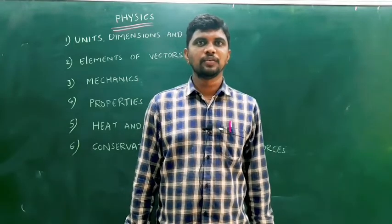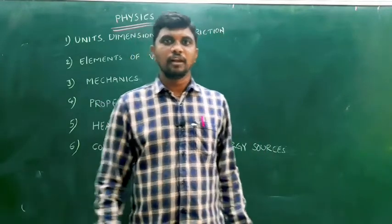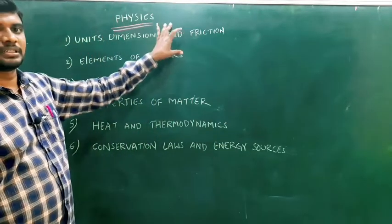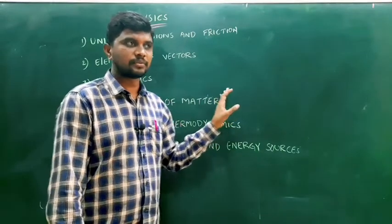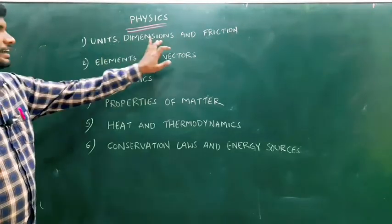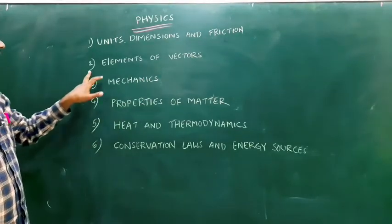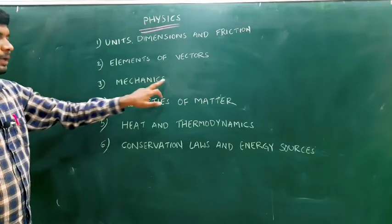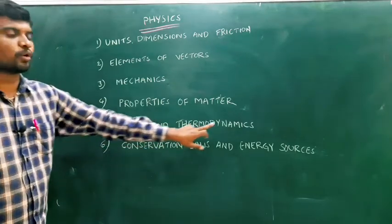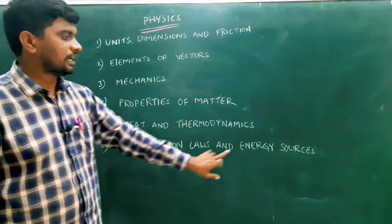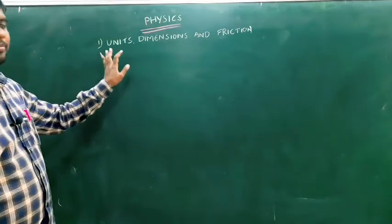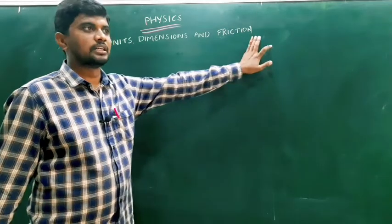This is Dharai Lama, assistant professor of physics at Wits College. Welcome to Wits Connect. Let us discuss the physics syllabus for the first year diploma, first semester. There are six chapters: first, units, dimensions and friction; second, elements of vectors; third, mechanics; fourth, properties of matter; fifth, heat and thermodynamics; sixth, conservation laws and energy sources.